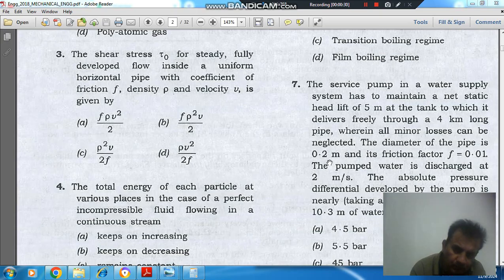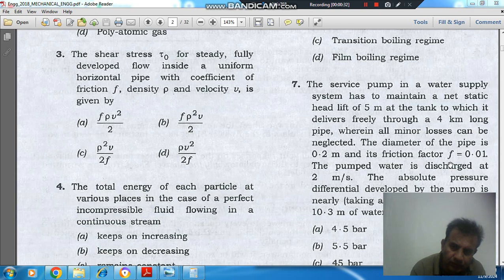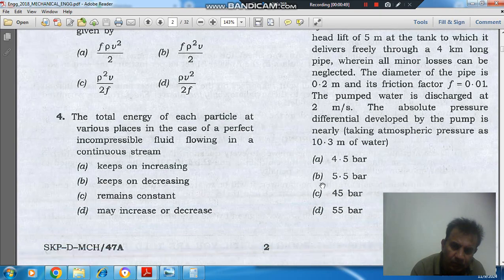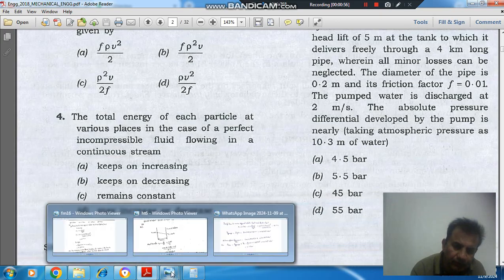The diameter of pipe is 0.2 meter and its friction factor F is equal to 0.01. The pumped water is discharged at 2 meter per second. The absolute pressure differential dropped by the pump is nearly, taking atmospheric pressure as 10.3 meter of water: option A, 4.5 bar; option B, 5.5 bar; option C, 45 bar; and option D, 55 bar.